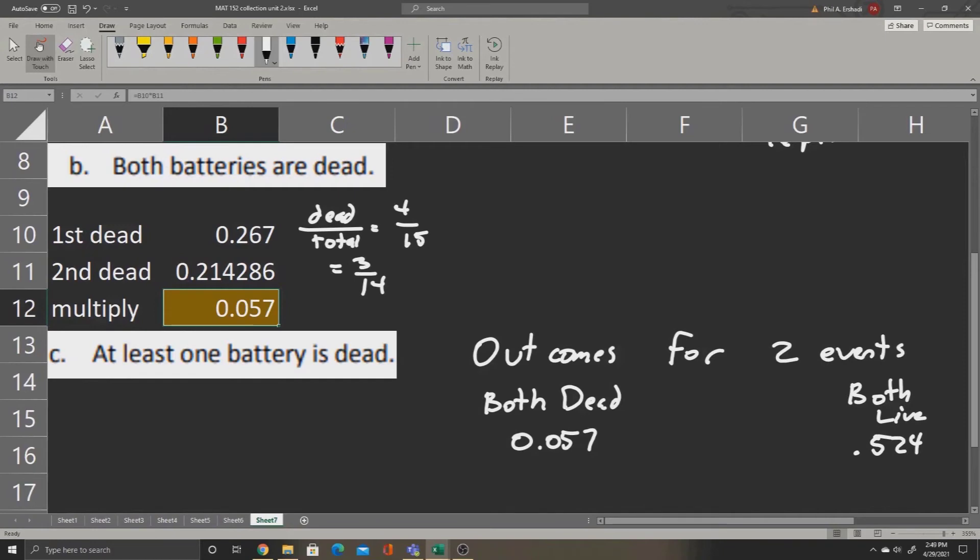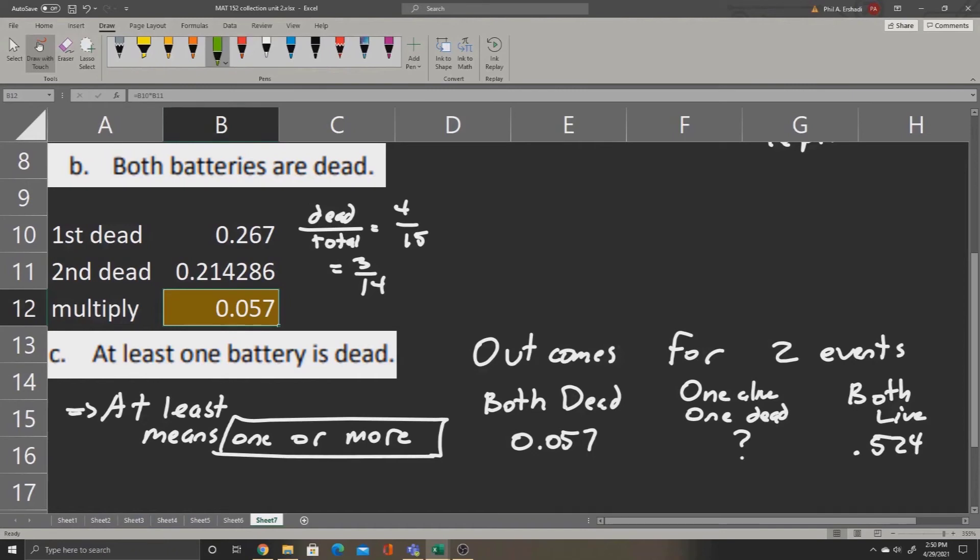Now we could also have one of them alive and one of them dead. Now we haven't actually calculated this yet. However, let's go through the outcomes that fit this description. When they say at least one battery is dead, at least means one or more. So the outcomes that fit that description are the outcome where they're both dead and the outcome where one is alive and one is dead. However, there is one outcome that does not fit that description—the one where they're both alive.